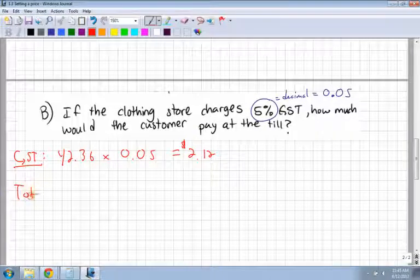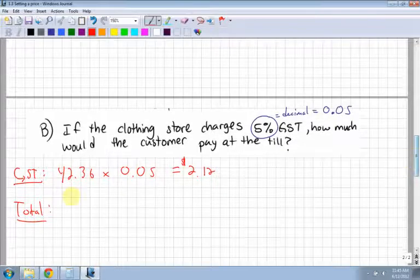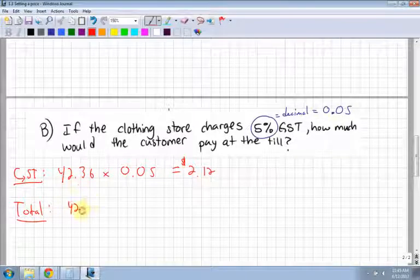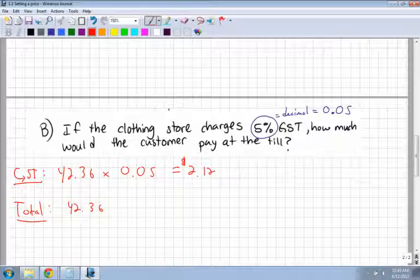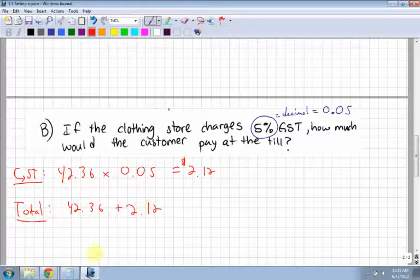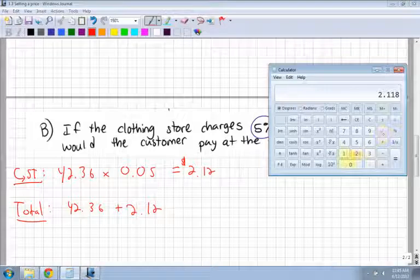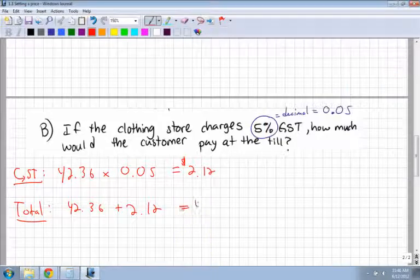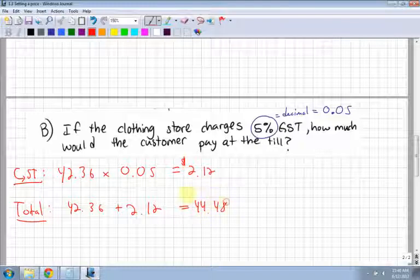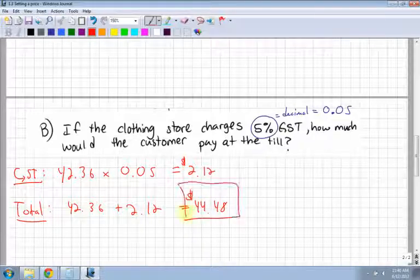What's the total? The total is going to be my original price, which was $42.36, the original price with the markup, and then plus the $2.12. $42.36 plus $2.12 is $44.48. This is the price the customer will pay.